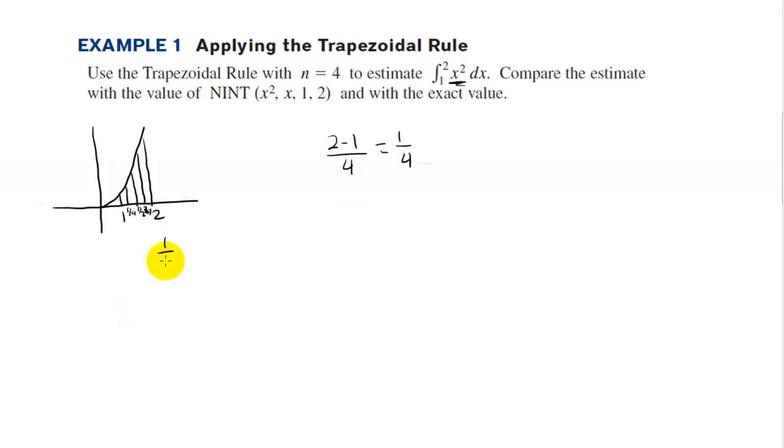So we want the height over 2 times f of 1 plus f of 1 and one fourth plus f of 1 and a half plus f of 1 and three fourths, and then plus f of 2, but we want to double these middle ones because they're used twice. Now remember the function is x squared.